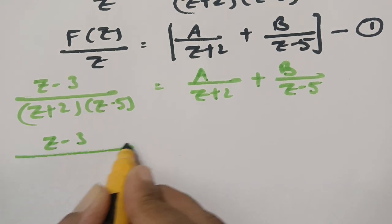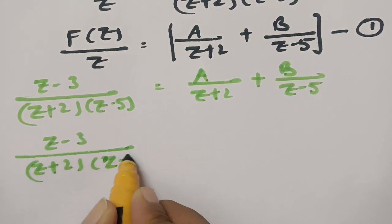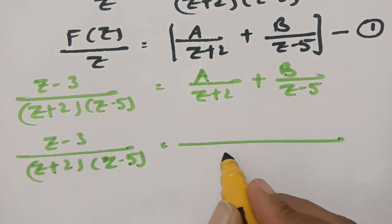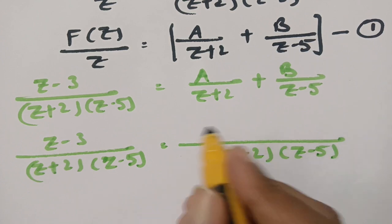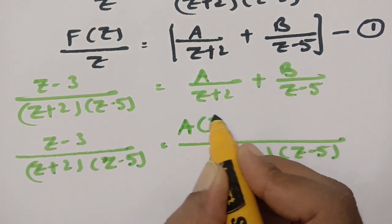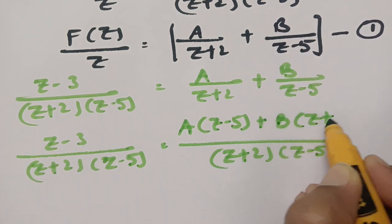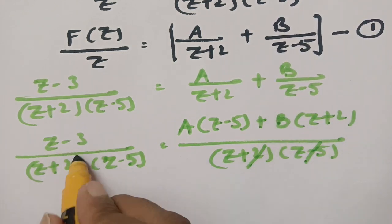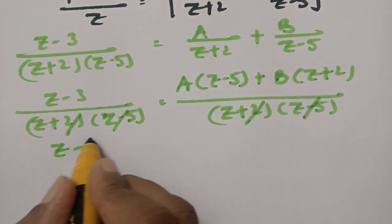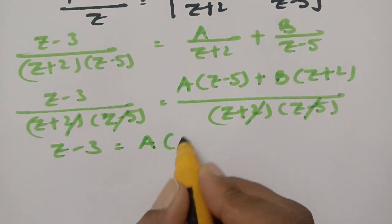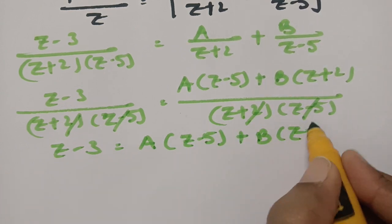Canceling the denominators, Z minus 3 is equal to A into Z minus 5 plus B into Z plus 2.